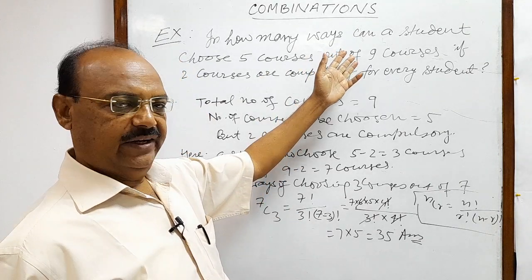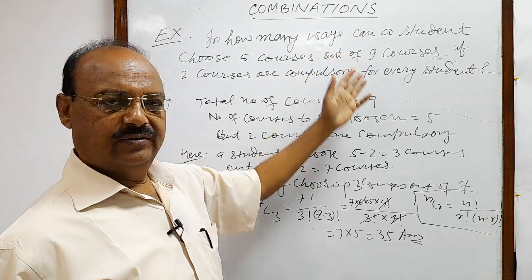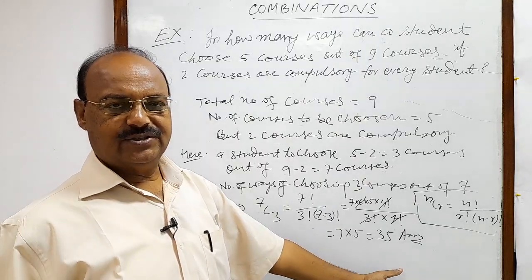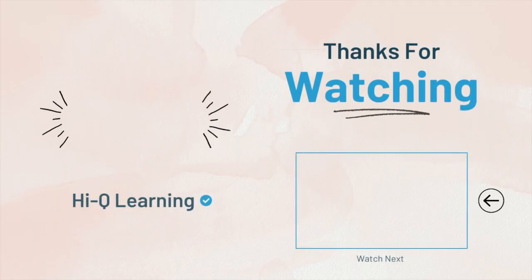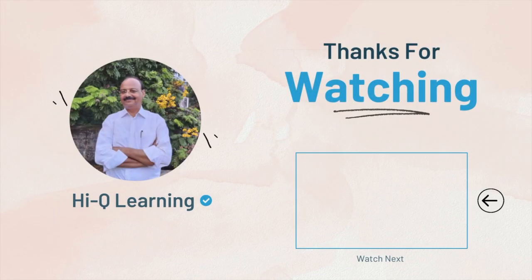35 is the answer. This is the number of ways through which a student can choose five courses out of nine courses.